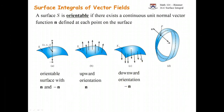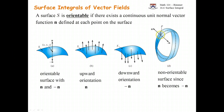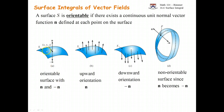Not all surfaces are orientable. The Mobius strip that you see here is not orientable. As you follow through and go around, the normal vector n becomes minus n, so it's not a continuous unit normal vector. The Mobius strip is not orientable, but what we need is to be able to capture the value of n depending on the formula for the surface.